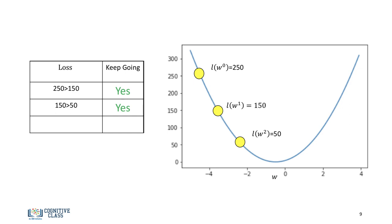For the second iteration, we get 50. And because 50 is smaller than 150, we keep going. In this final iteration, we see that the loss is 100. Because 100 is not smaller than 50, we can stop gradient descent. And we use the value of the parameter where the loss was 50, i.e., minus 2.5.